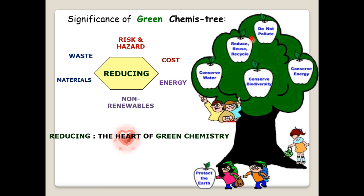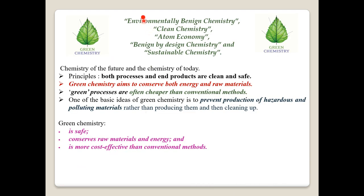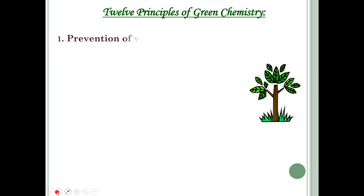You're going to look at this chapter not just to score marks but as something to apply in daily life. Green chemistry can also be called environmentally benign chemistry, clean chemistry, or sustainable chemistry. It aims to conserve both energy and raw materials. Green processes are cheaper than conventional methods, prevent production of hazardous and polluting materials, conserve raw materials, and are cost effective.